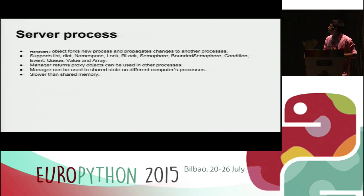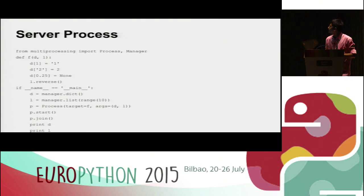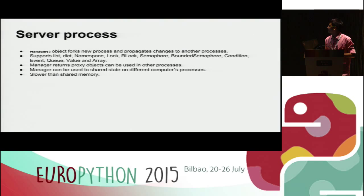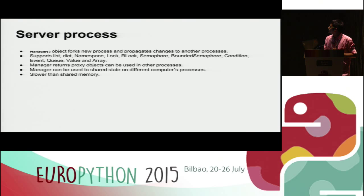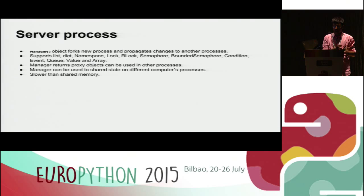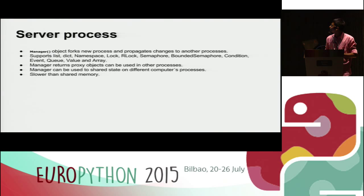Another option is the Manager. Manager objects fork a new process whenever you start them. Manager gives the benefit that you can use dictionary and list objects. It is lower in performance than shared state using Array and Value, but it supports more types. Manager starts a new process when you create an object of it. It provides a proxy object supporting namespaces, dicts, locks, RLocks, semaphores, conditions, events, queues, values, and arrays. Manager can also be used to share state across processes on different computers.